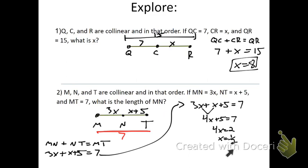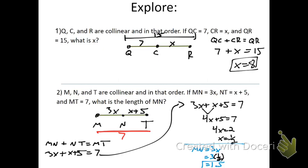We've got to be careful — that doesn't mean MN has a length of one half; it means X equals one half. We have to go back and find the length of MN. MN equals 3 times X. Since X is one half, 3 times one half is 1.5. MN has a length of 1.5 units.